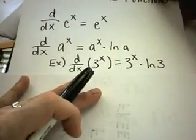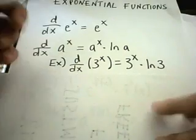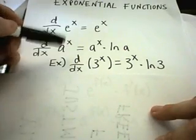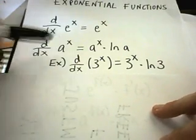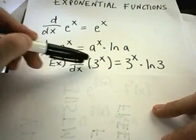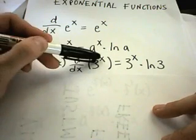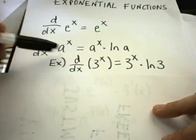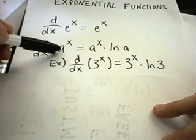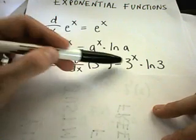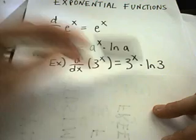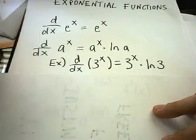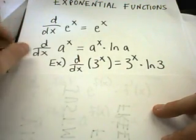A simple example of the second formula: if you take the derivative of 3 to the x — a number to a variable power — you just get 3 to the x times the natural logarithm of 3.